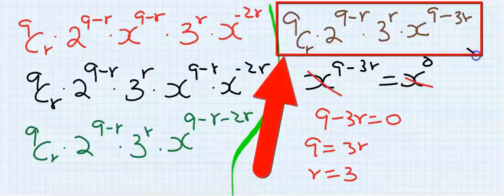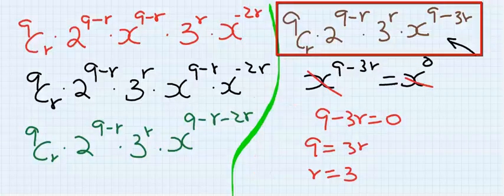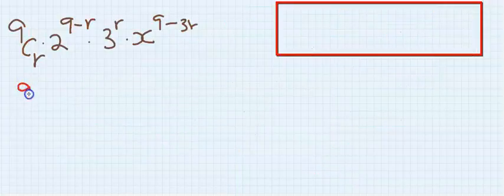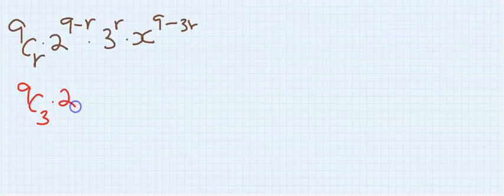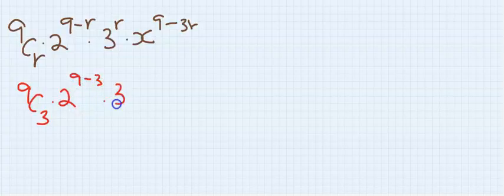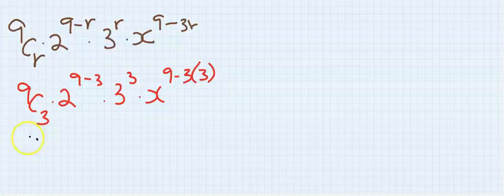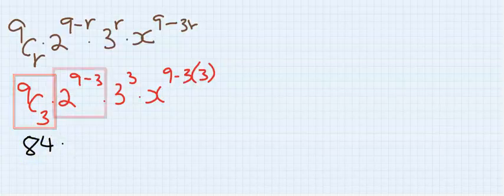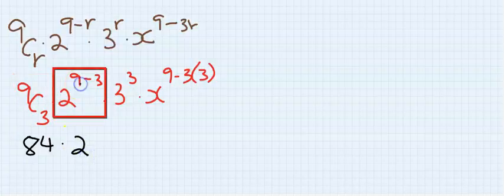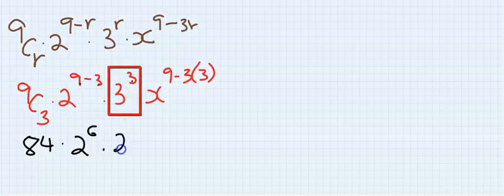The next step is, I will substitute r into this step, the step that you took before you see x equal to the power of 0. So we're going to have 9 combination 3, 2 to the power of 9 minus 3, 3 to the power of 3, x to the power of 9 minus 9. I'm going to have 84 for 9 combination 3, and this is 2 to the power of 6, and 3 to the power of 3 is 27.